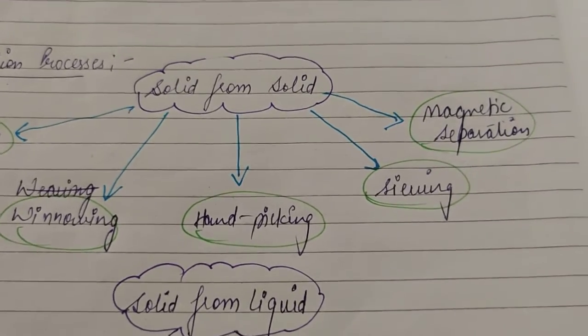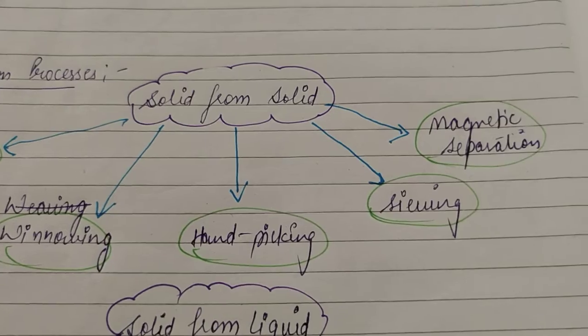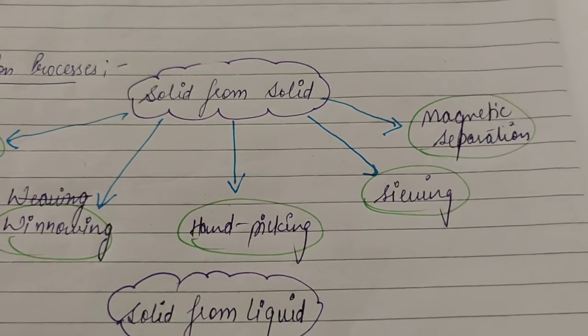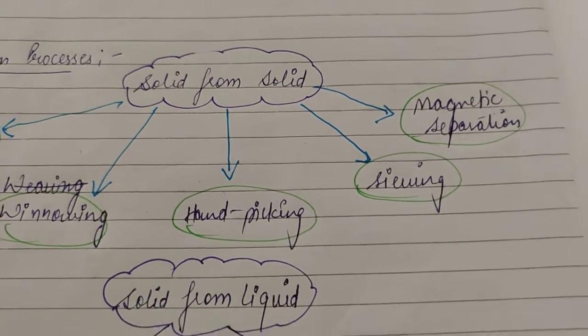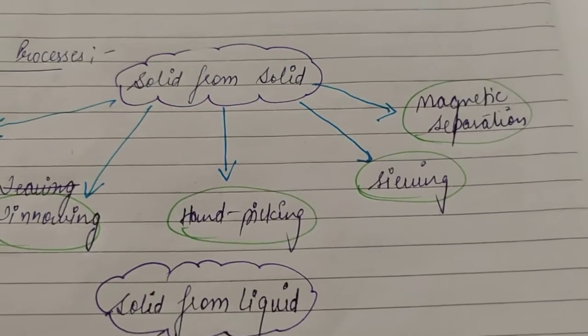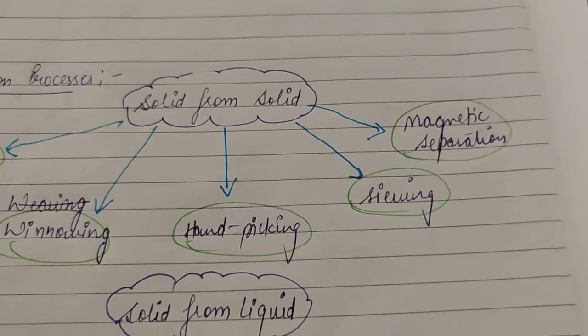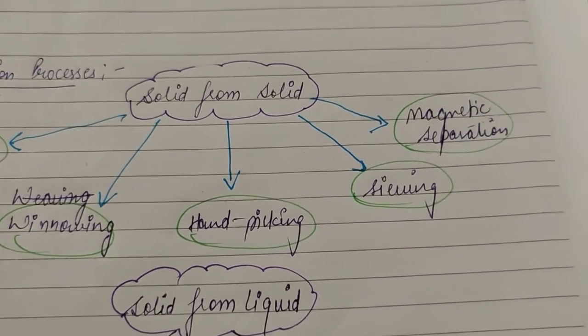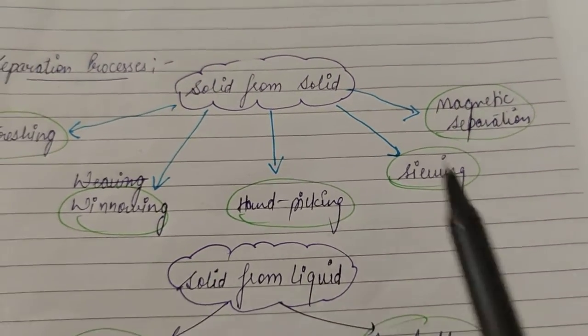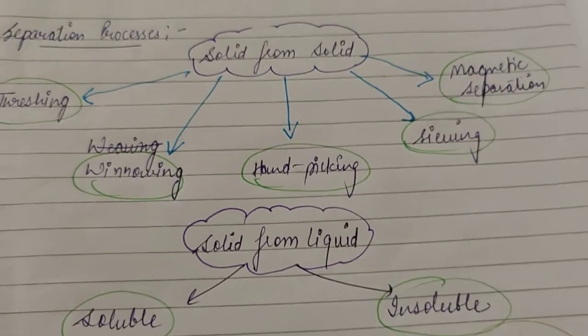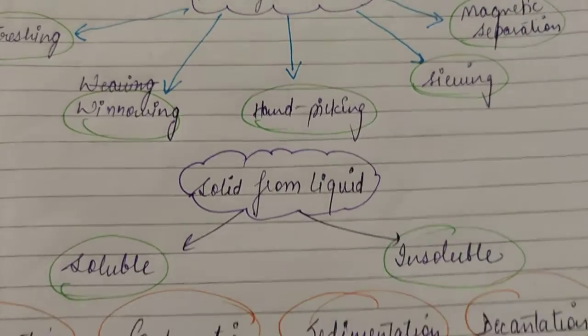Then magnetic separation. Magnetic separation is done in cases where you have one magnetized and other non-magnetized material. Like if you want to separate iron and sand particles, then iron can be magnetized and sand cannot be, so you can easily separate the particles of iron. These are the five separation processes to separate a solid from another solid.